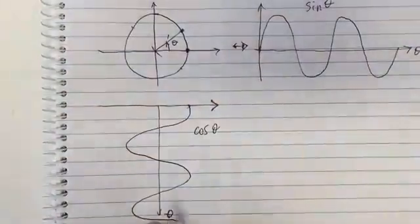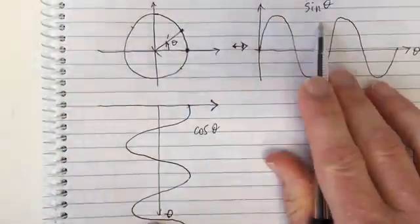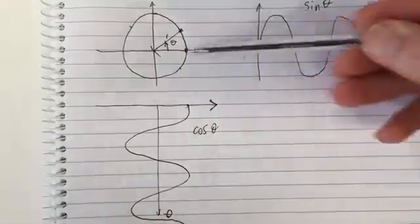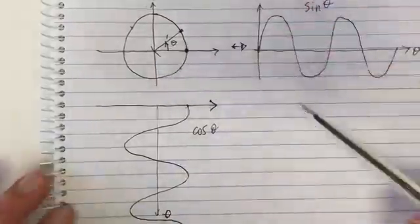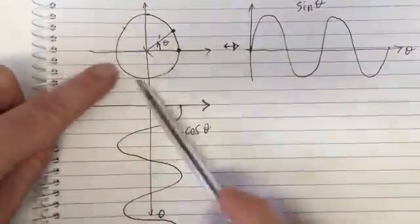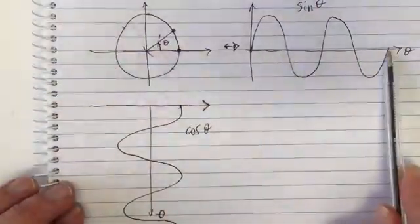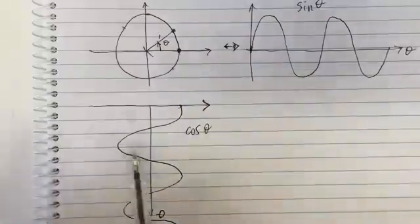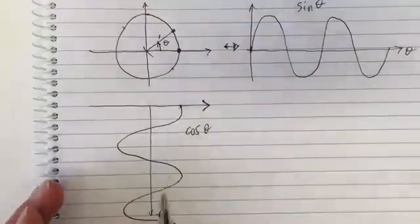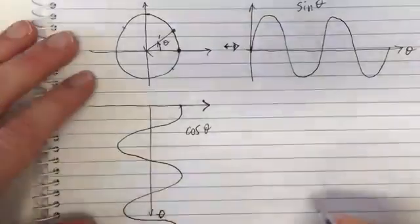So if I'm plotting it with respect to theta, this is cos theta and we've got sine theta. So if we look in two orthogonal directions, as this point moves around a circle, we would see a sine wave from one direction and from an orthogonal direction, 90 degrees, we'll see a cos wave.